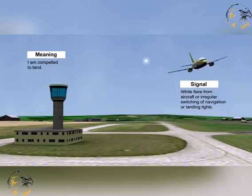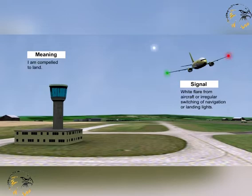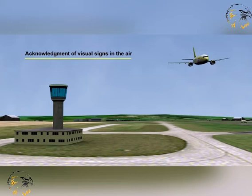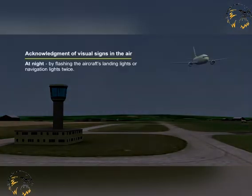Finally, a white flare or irregular use of navigation and/or landing lights from an aircraft means that the pilot is compelled to land. Aircraft must acknowledge receipt of any visual signal. When in flight, during the hours of daylight, acknowledgment is made by rocking the aircraft wings. During the hours of darkness, by flashing on and off twice the aircraft's landing lights, or if not so equipped, by switching on and off the navigation lights twice.